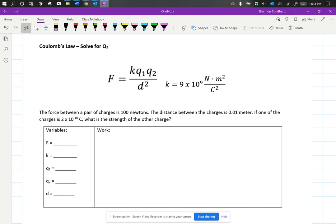Okay, so let's write our variables inside our variable box. They told us that force is 100 newtons. They told us that the distance between the charges is 0.01 meter, but we can't forget we have to square that.